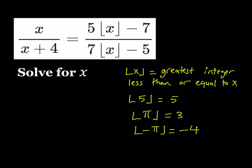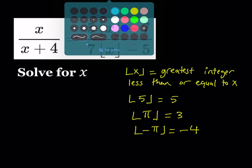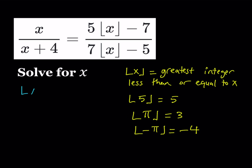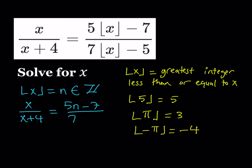Let's go ahead and solve this equation. I'll start by setting the floor value of x equal to n, where n is an integer — because the floor value of x is always an integer. Once I do that, I get x over (x + 4) equals (5n − 7) divided by (7n − 5). Let's not forget that n is an integer.